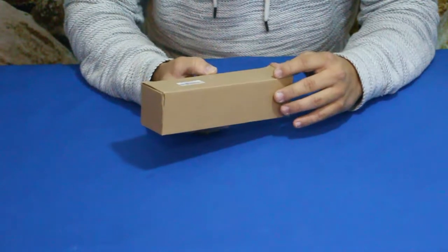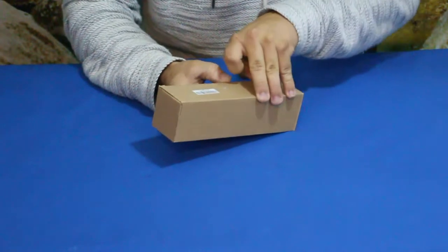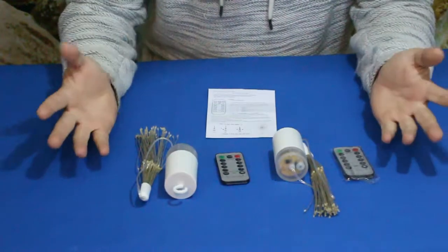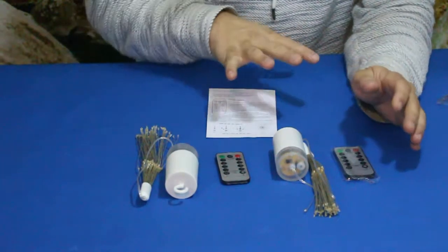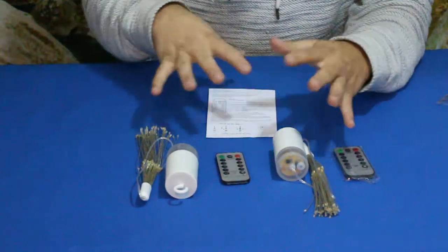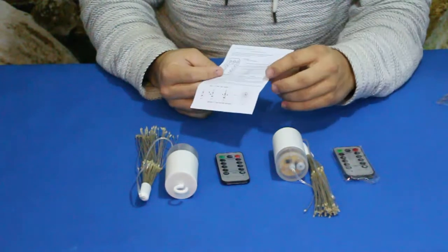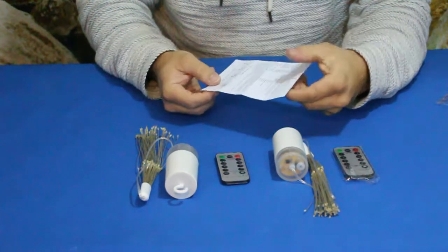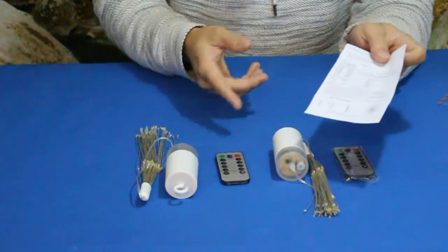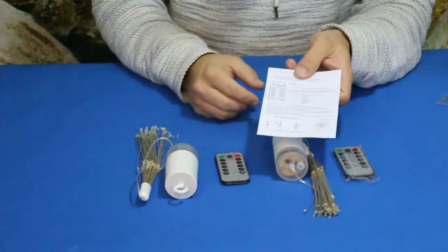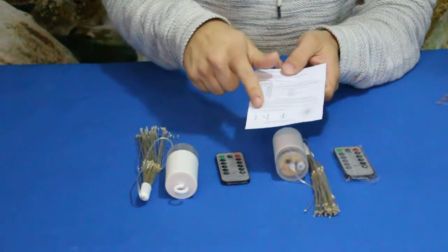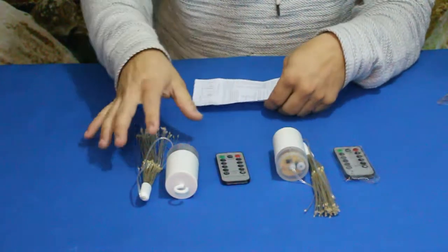Alright everybody, so here's what we've got in the box. As you can see, just a few items here. First thing we've got is the instructions, and obviously these are very simple instructions. You can see there's remotes there, so we have instructions for the remotes as well as instructions for the two devices here.